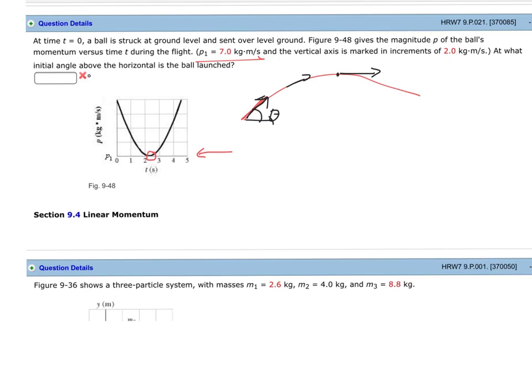So we know that this, in this problem, is 7 kilograms times meters per second. We want to find this, and then this.